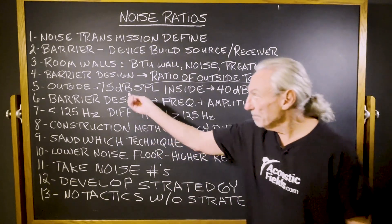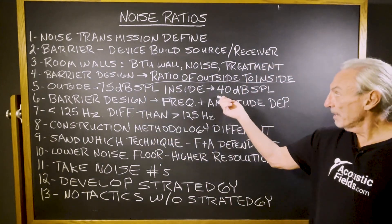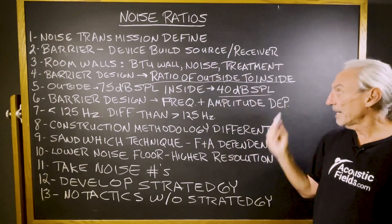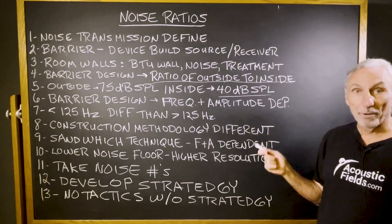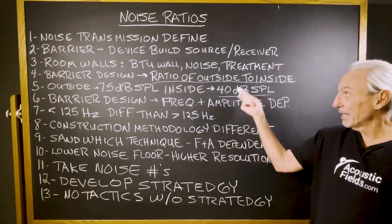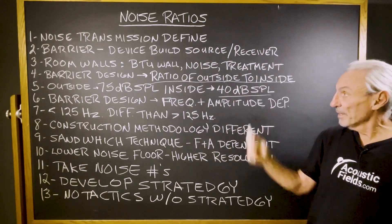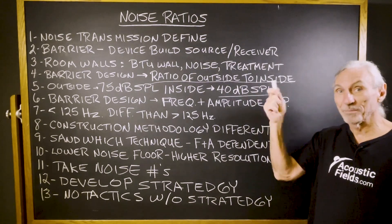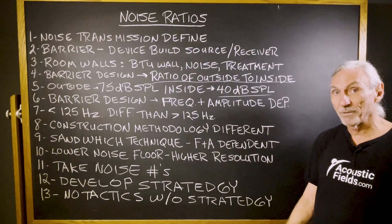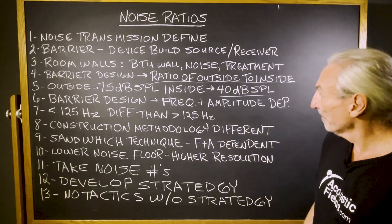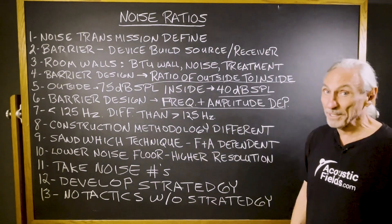If we have an outside measurement of 75 dB SPL across the range, and we want an inside noise floor of 40, well, we have our work cut out for us. We've got 25 points to close — getting from 75 on the outside to 40 on the inside. Barrier design is frequency and amplitude dependent.